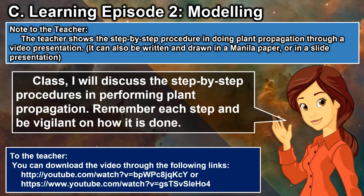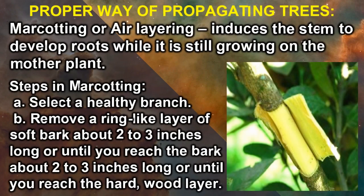Class, I will discuss the step-by-step procedures in performing plant propagation. Remember each step and be vigilant on how it is done. Proper way of propagating trees: Marcotting or air layering induces the stem to develop roots while it is still growing on the other plant.